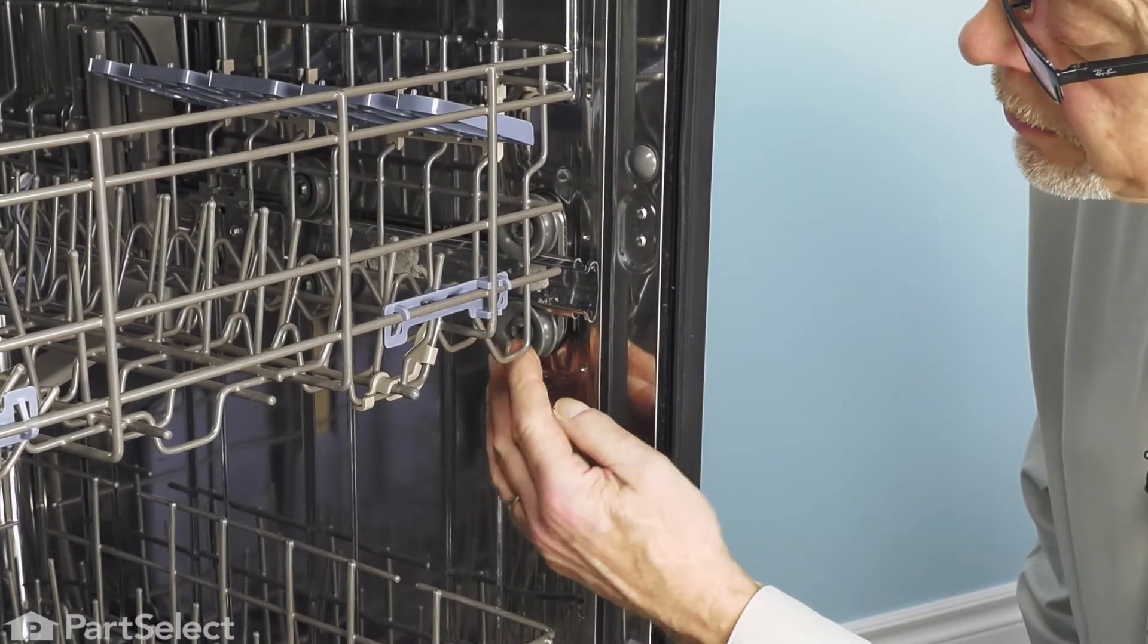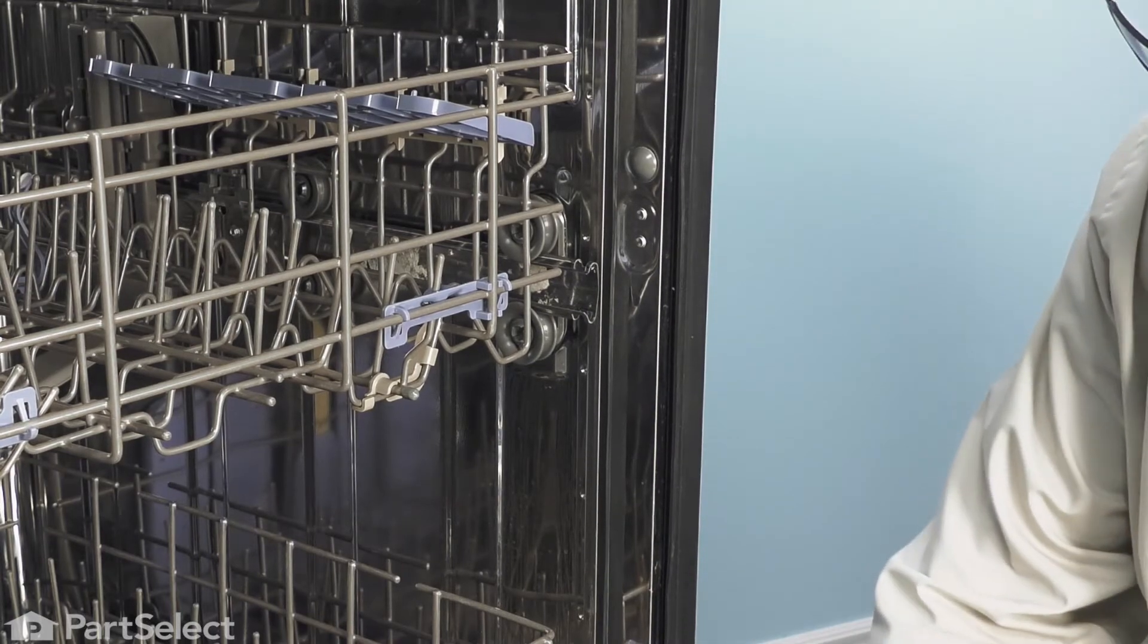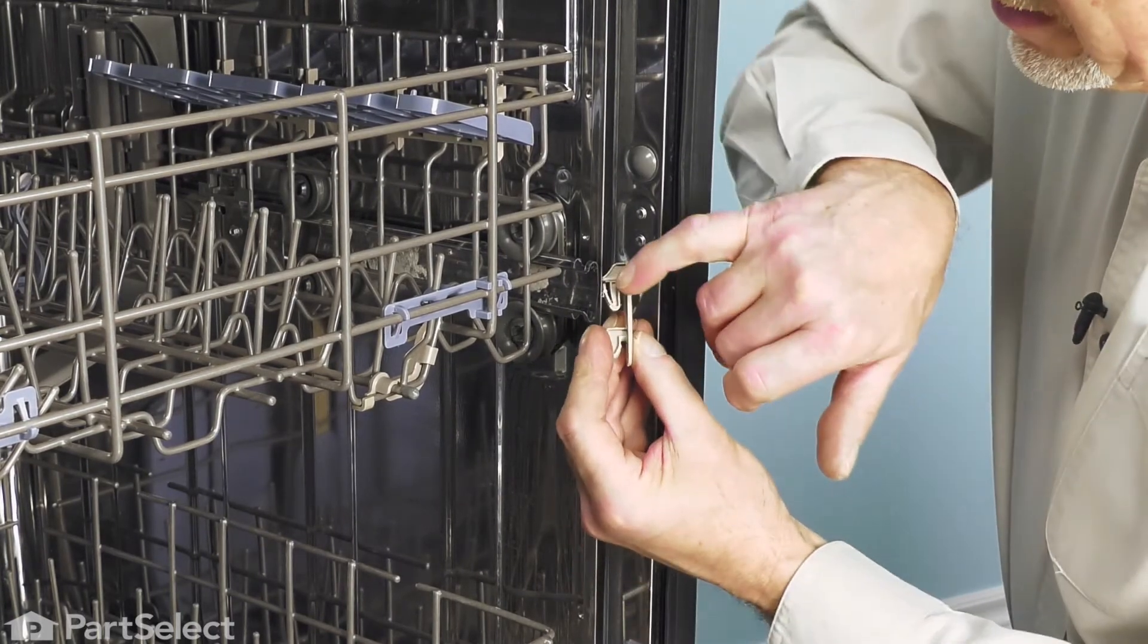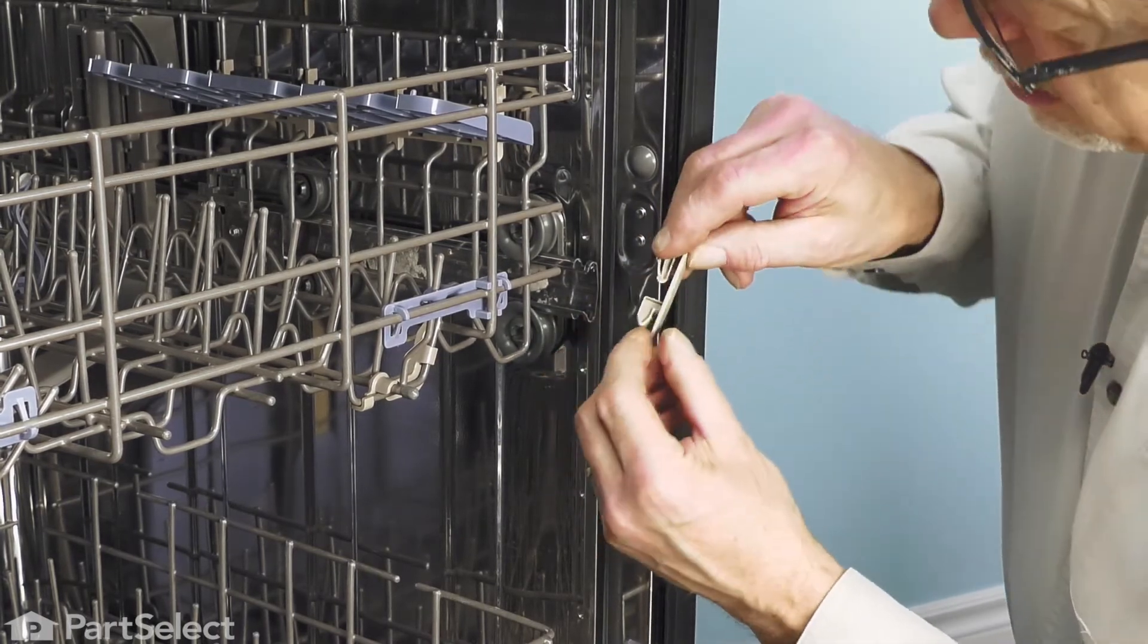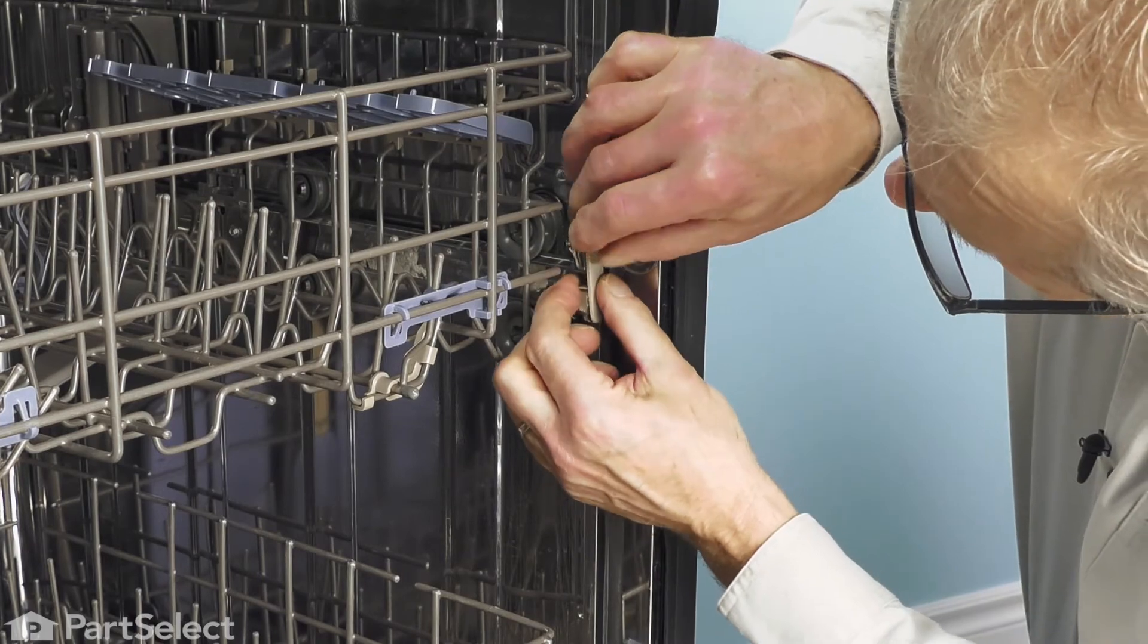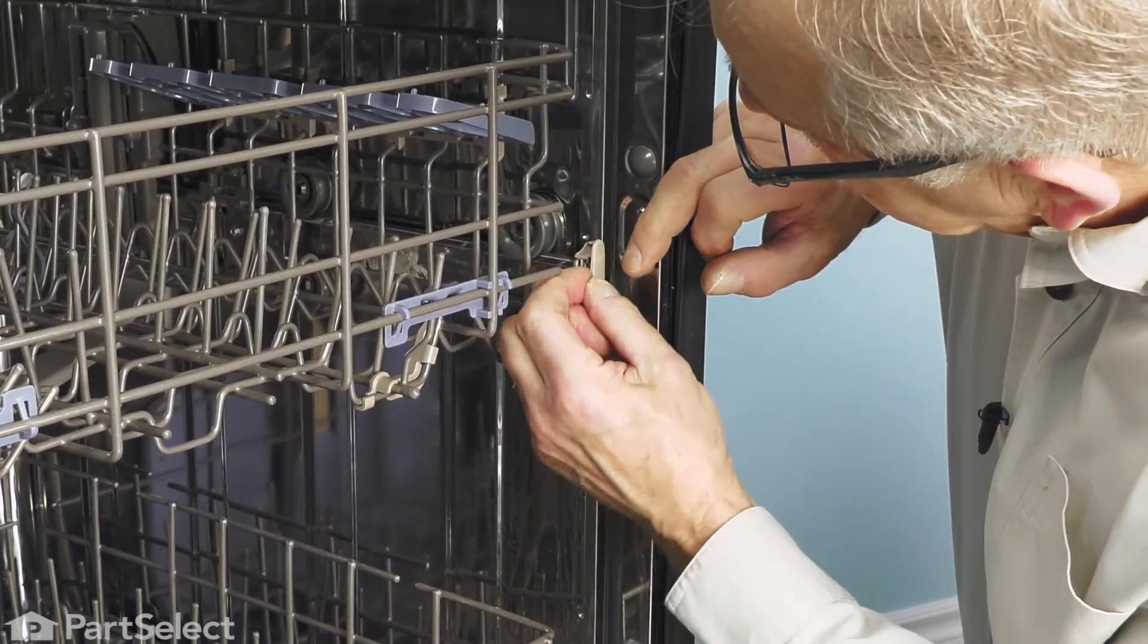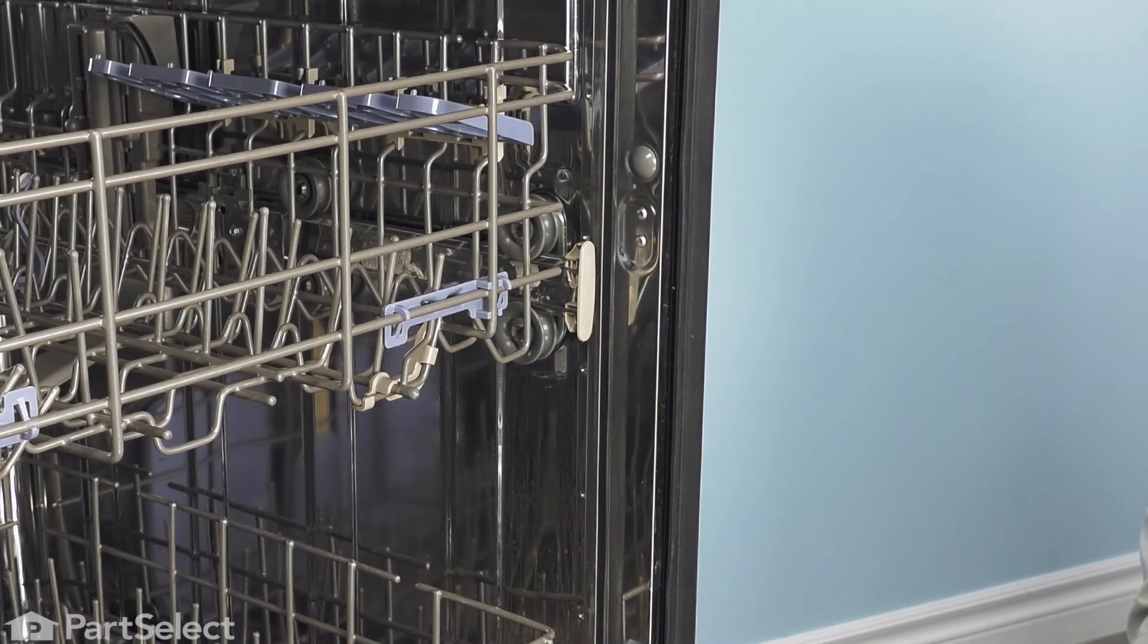Now that we have the retaining screws tightened securely, I'm going to take the rack stop and reinstall that. We'll make sure that the removable clip is at the top, line it up, press it down into place, make sure it's locked in, and now we can close up the dishwasher.